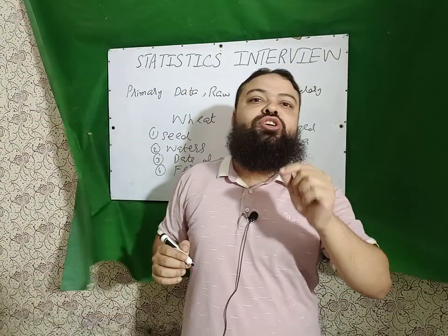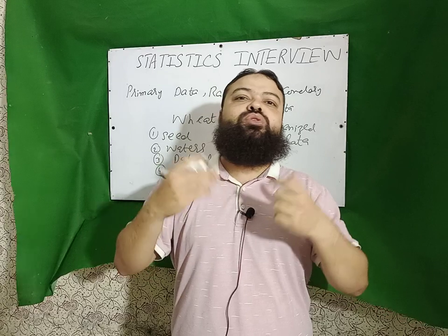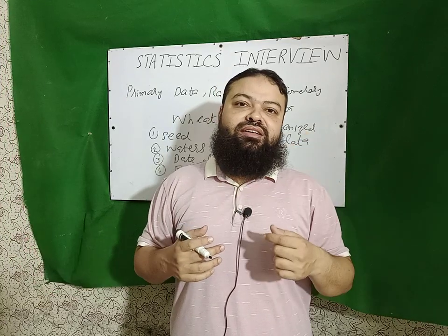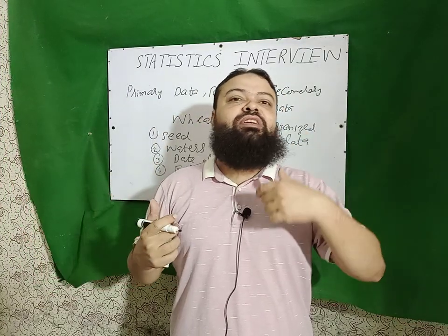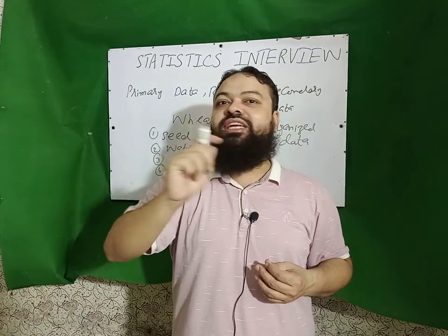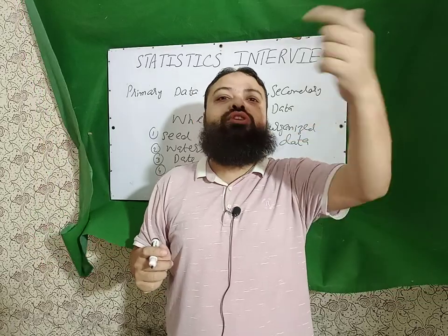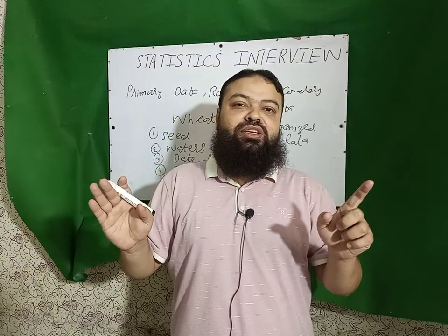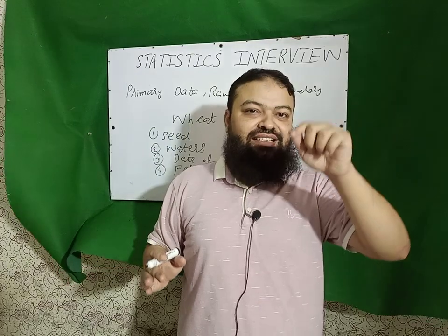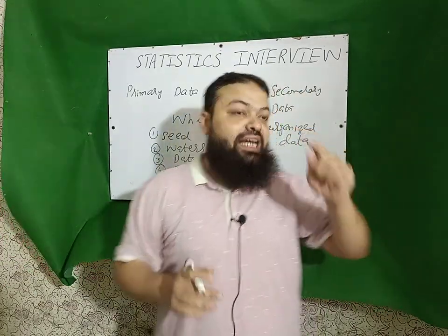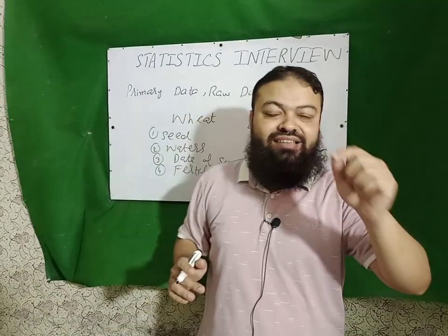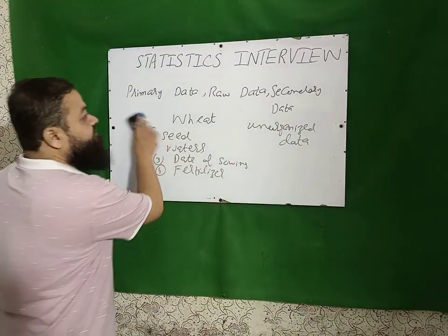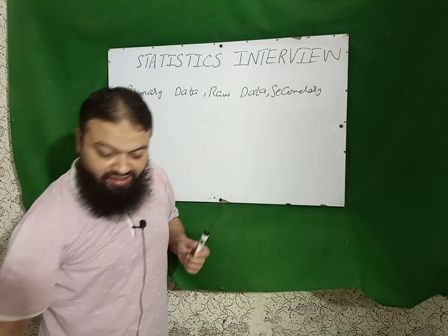Raw data is not collected by you. If you are my friend and you call me and say that you need the data of the farmers, and I give you that data — which is primary for me — when you take that data for your own use, you are not my enumerator. If you were my enumerator, you would go into the field and collect the data, and then that would be primary data. But if you are not my representative and you take that data from me for your own purpose, then that will be raw data — unorganized and not collected by yourself.